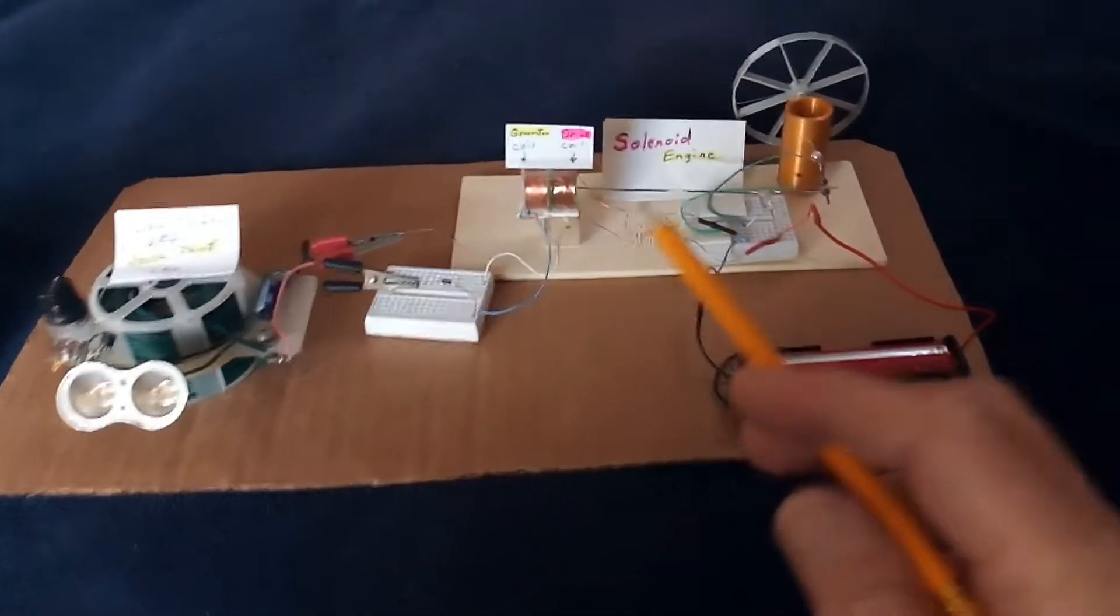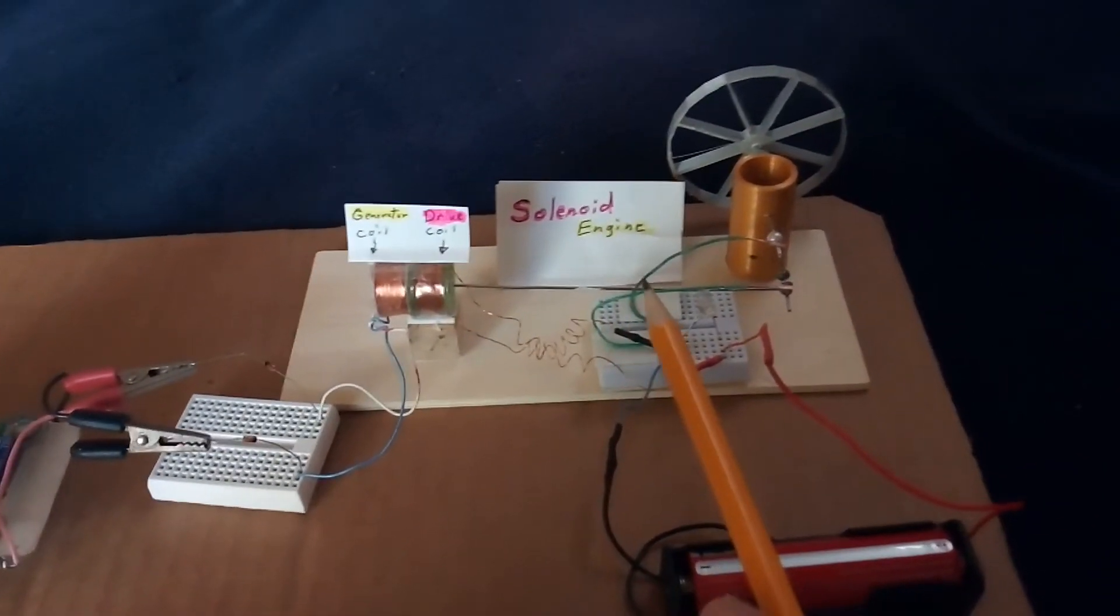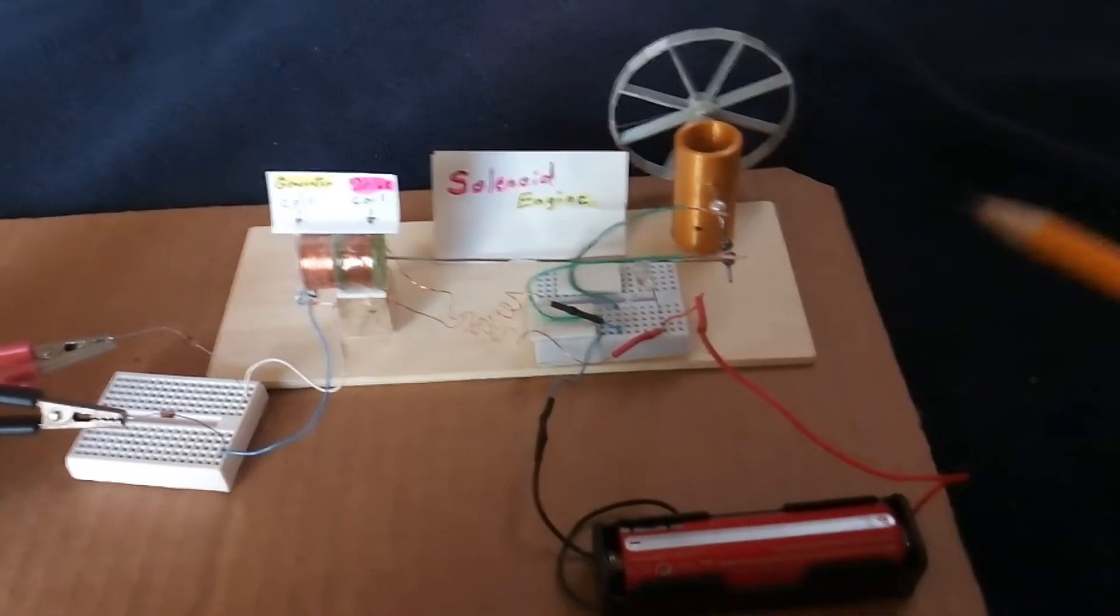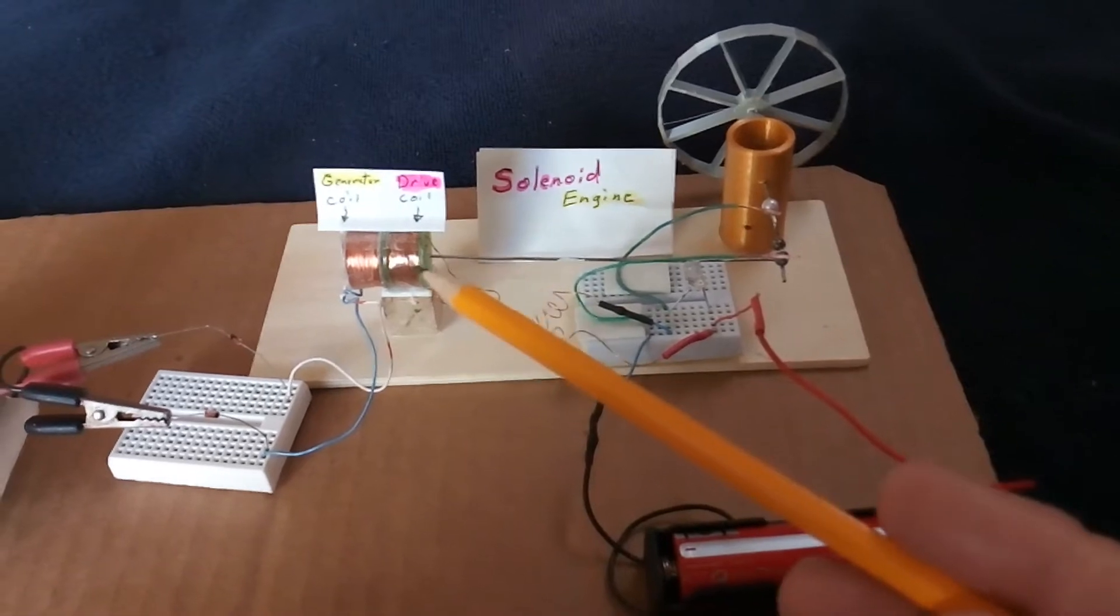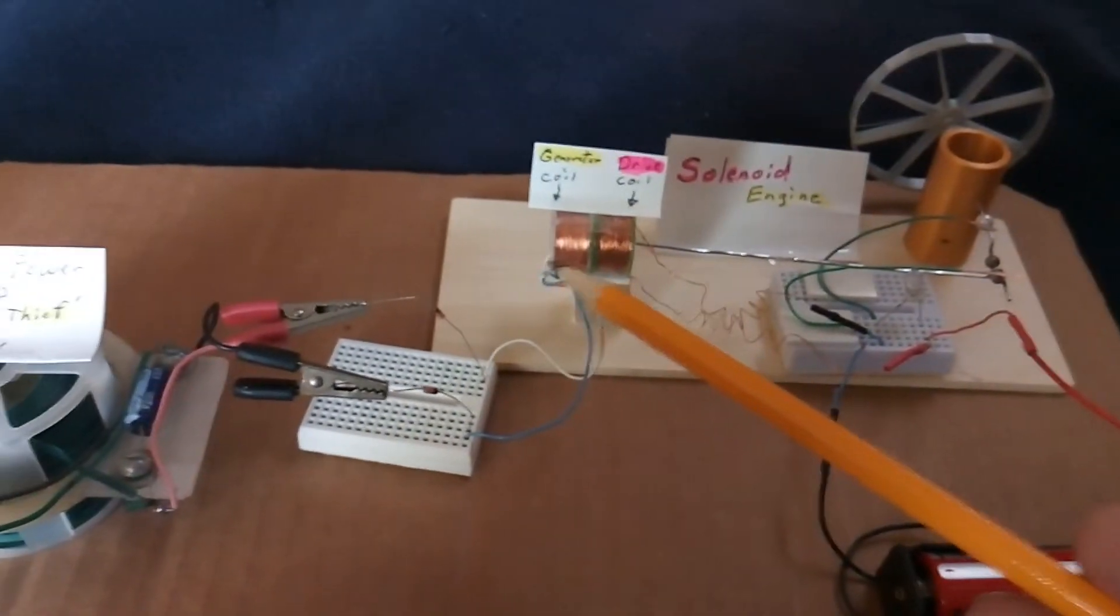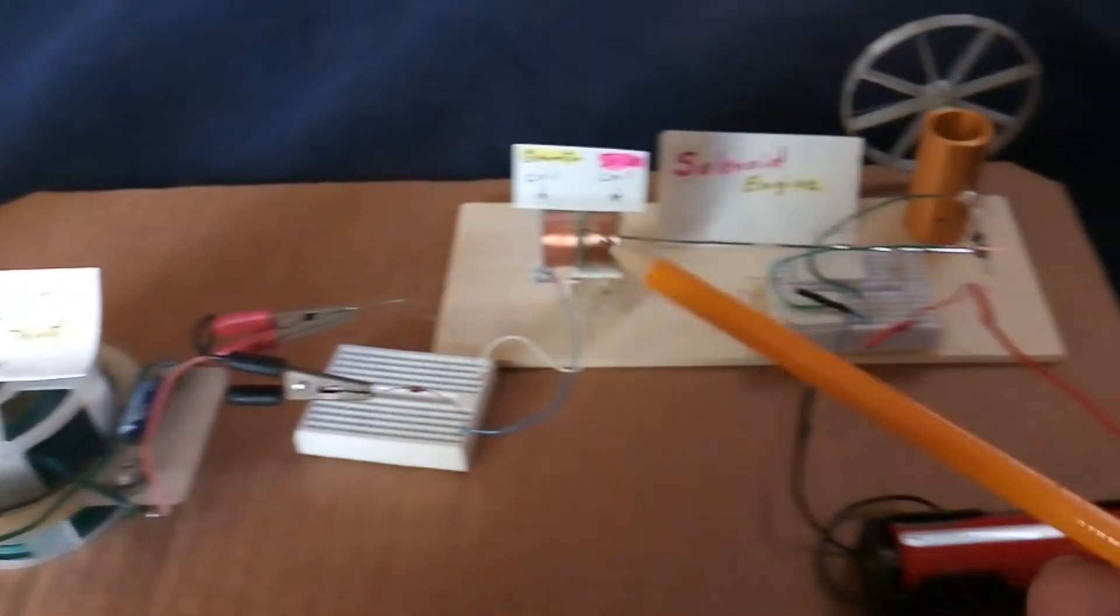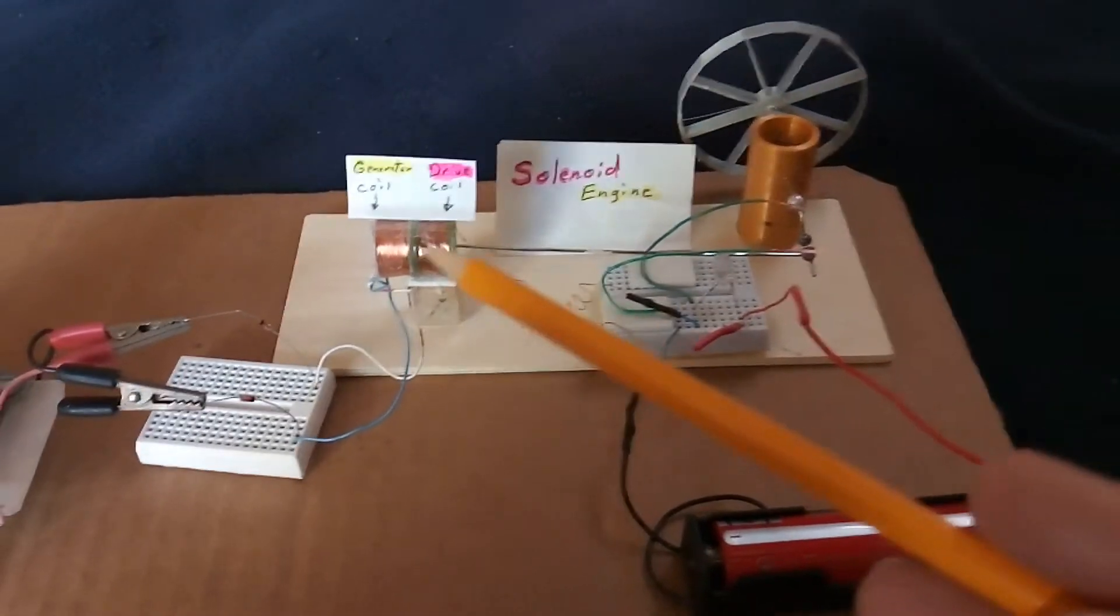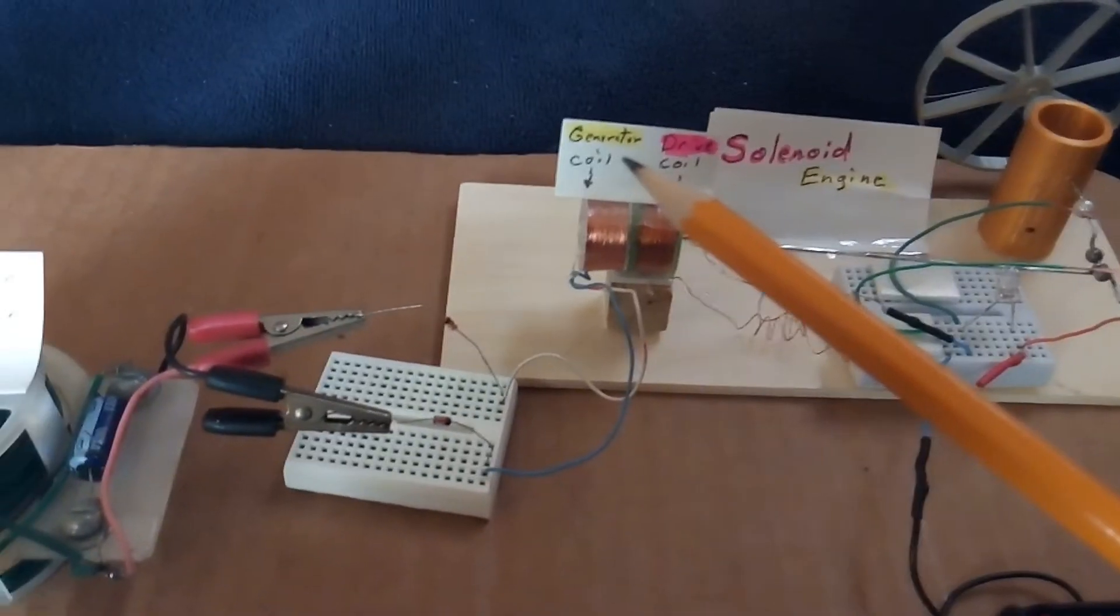Okay, well this is my little solenoid engine project that I've showed a couple of videos on already. What it is is a coil of wire that moves a magnet array back and forth, and then it goes through this cranking system with a simple switch to turn the wheel around. And then I've added a generator coil.